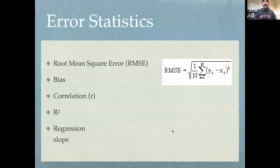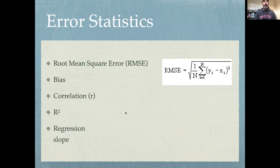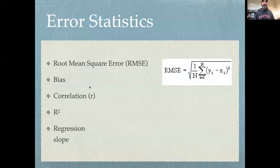Some very common examples of skill scores that we use to assess model performance — many of these are related to the basic summary statistics we learned when trying to understand patterns in data. One particularly common one is the root mean squared error, RMSE. It's a mouthful, but it's a great name for a metric because it tells you exactly what it is.